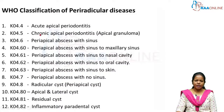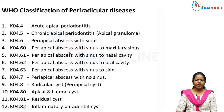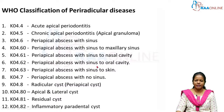The WHO classification of periradicular disease is numbered K04.4 to K04.8. K04.4 is acute apical periodontitis and K04.5 is chronic apical periodontitis. K04.6 in general means periapical abscess with sinus, with subdivisions: K04.60 sinus into the maxillary sinus, K04.61 sinus opening into the nasal cavity, and K04.62 sinus into the oral cavity.